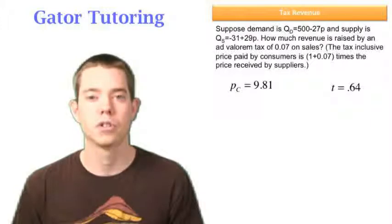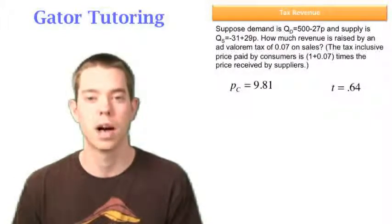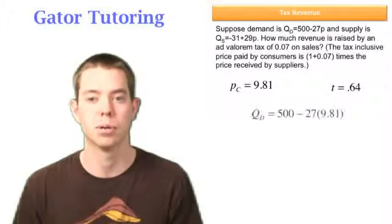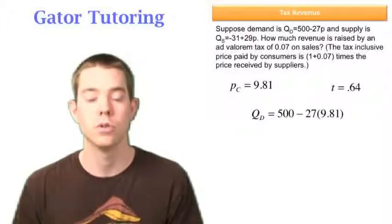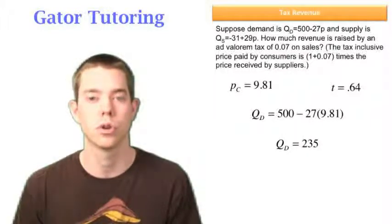So we know that the price that consumers pay is 9.81 and the tax is 0.64. Now you could solve this a couple of ways. So there's not necessarily one right way, but I'm going to use the price that the consumers pay and I'm going to plug it into the demand function. You could have used the price that suppliers get and you could plug it into the supply function. You'll get the same answer. But I've chosen to use the price that consumers pay and I plug it into the demand function. And I get that the quantity demanded is equal to 235.